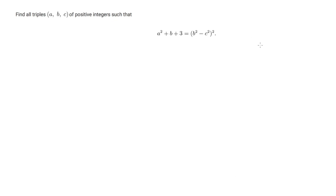So let's take a rest today and let me show you the first problem in the recent Japan MO Finals. The problem is the following: we want to find all triples of positive integers such that a² + b + 3 equals (b² - c²)².